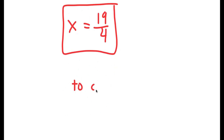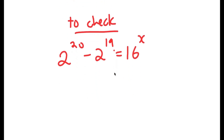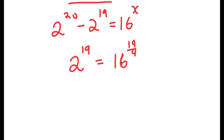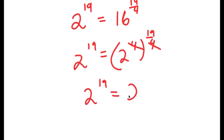To check: my original equation was 2 to the power of 20 minus 2 to the power of 19 is equal to 16 to the power of x. We already know that's 2 to the power of 19. So we get 2 to the power of 19 is equal to 16 to the power of 19 over 4. Now 16 is the same thing as 2 to the power of 4, so I have 2 to the power of 4 to the power of 19 over 4, and these two 4s cancel out, so I get 2 to the power of 19 is equal to 2 to the power of 19.